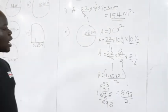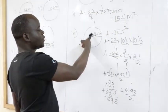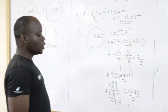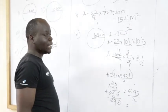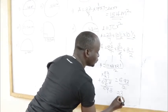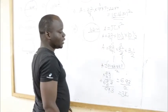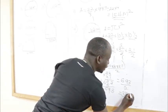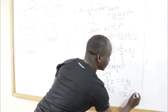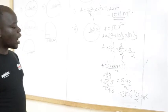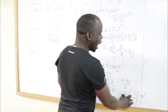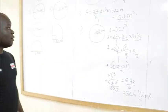Now change 693/2 back to a mixed number, since the original was a mixed number. Dividing: 2 into 693 gives 346 remainder 1, so the answer is 346½. Therefore our area is 346½ square centimeters.